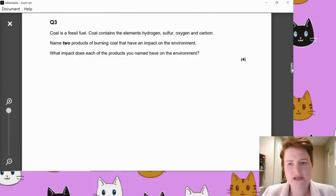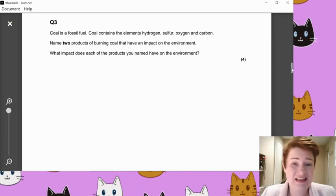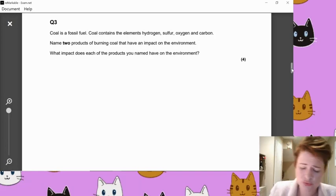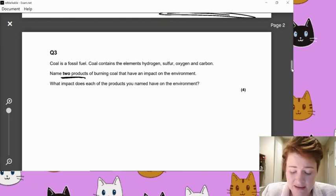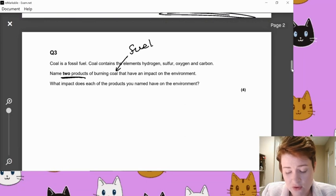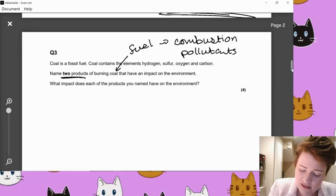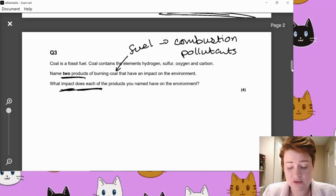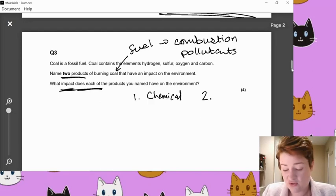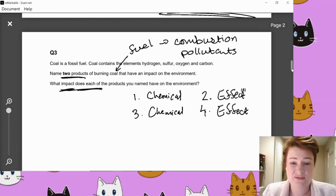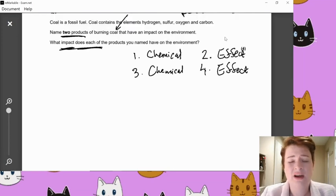Question three was extremely well answered. Quite a lot of people, I'd say over 50% of you got four out of four on that, which is absolutely brilliant. Well done there. So basically, you're talking about any combustion pollutant, really. So it says here, name two products of burning coal that has an effect on the environment. Not forgetting that coal is a type of fuel. So we are looking for combustion pollutants, whether it be complete or incomplete or there because of just impurities that are just there.